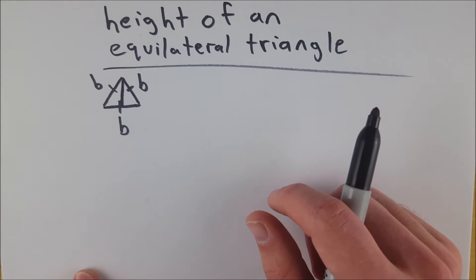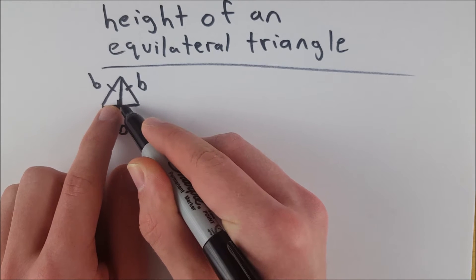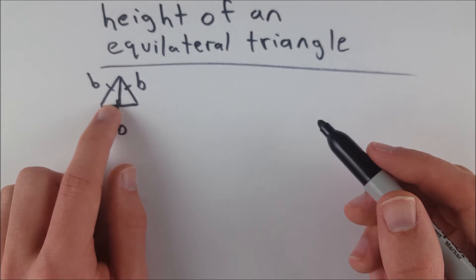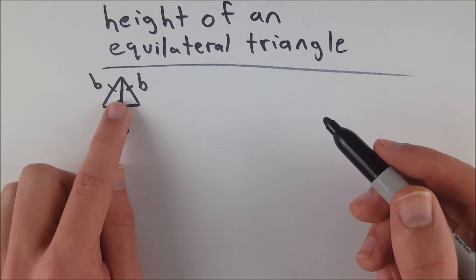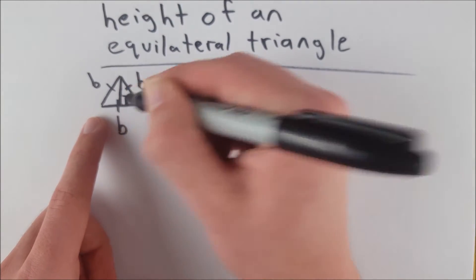And it also happens that they are congruent right triangles, because these two angles have to be congruent, since the triangles are congruent, and they are also supplementary. And any congruent supplementary angles each individually have a measure of 90 degrees. So these are congruent right triangles.